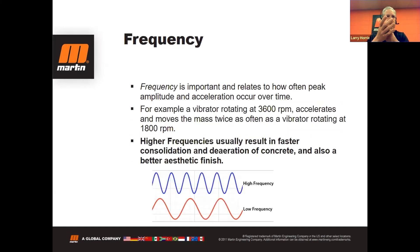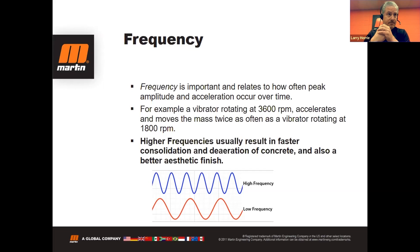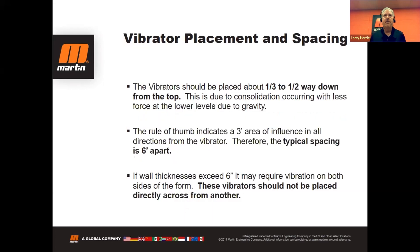Frequency is determined by speed, often expressed in RPMs or VPM — vibrations per minute. Higher frequency usually results in faster consolidation and deaeration of concrete. A vibrator rotating at 3,600 RPMs moves the mass twice as often as one rotating at 1,800 RPMs. It's rare to see an 1,800 RPM vibrator in this industry; 3,600 RPMs is more common for drier cast material, with higher frequencies for wetter concrete applications.